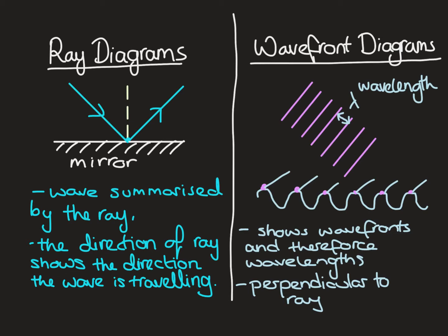These diagrams show the wavefronts and the wavelength. What's really important to remember is that the wavefronts are always perpendicular — 90 degrees — to the ray. So if we were going to draw a ray instead of the wavefronts, the ray would be at 90 degrees to them.